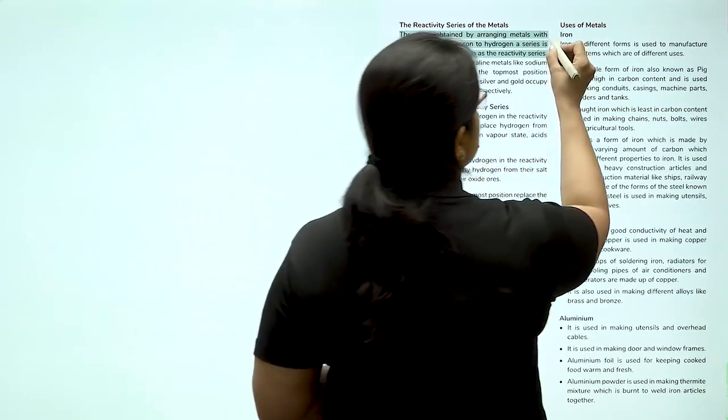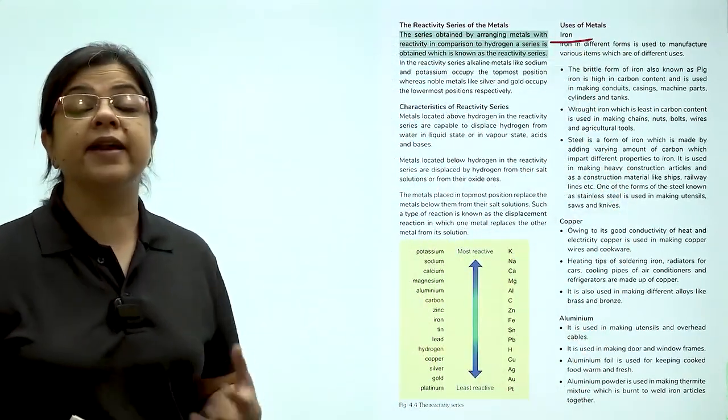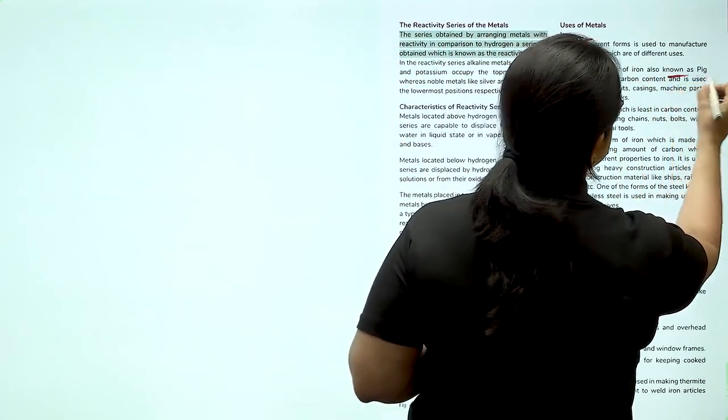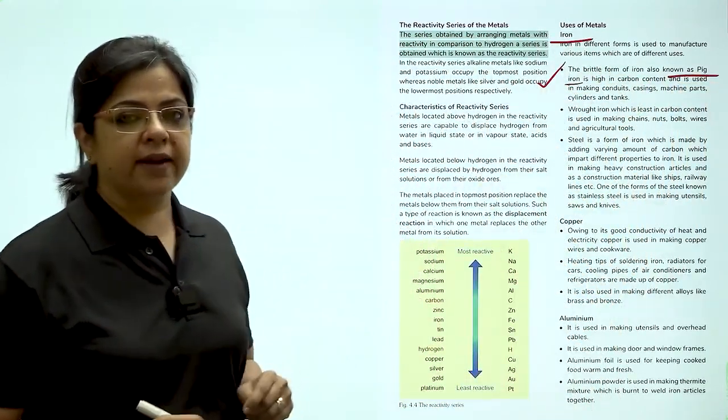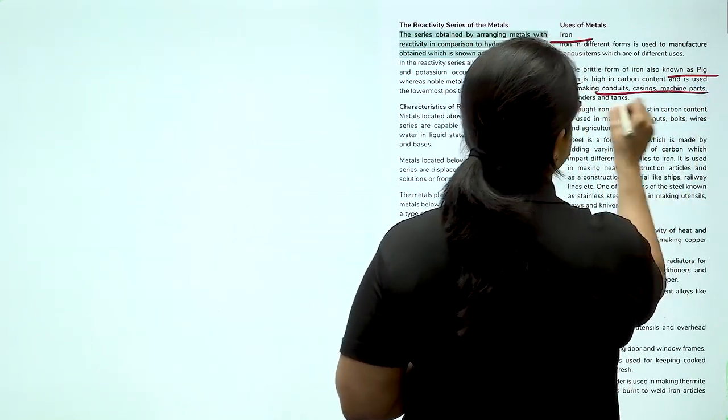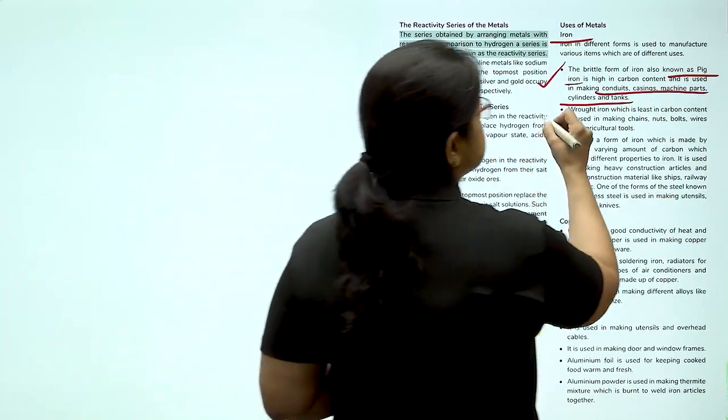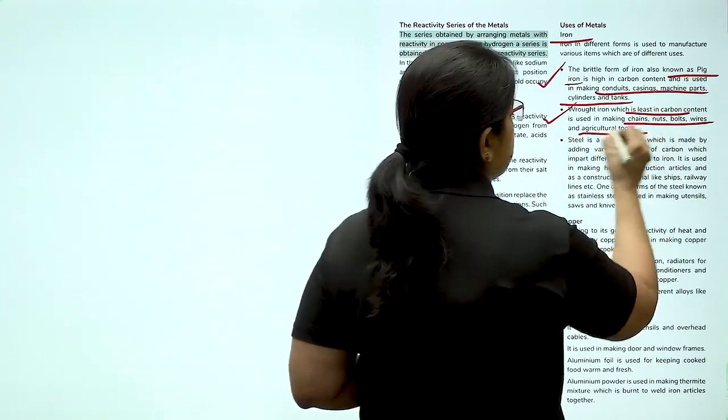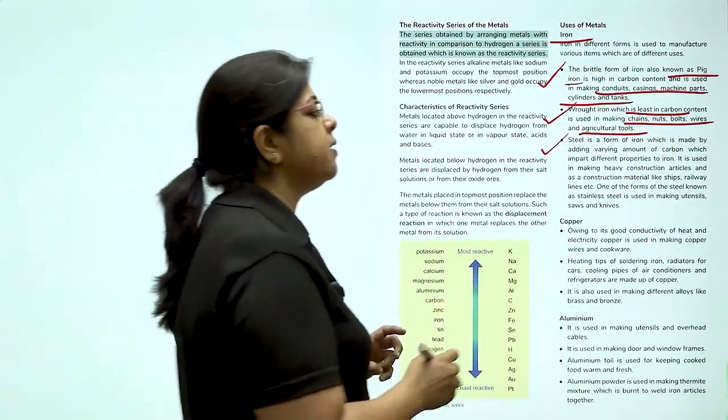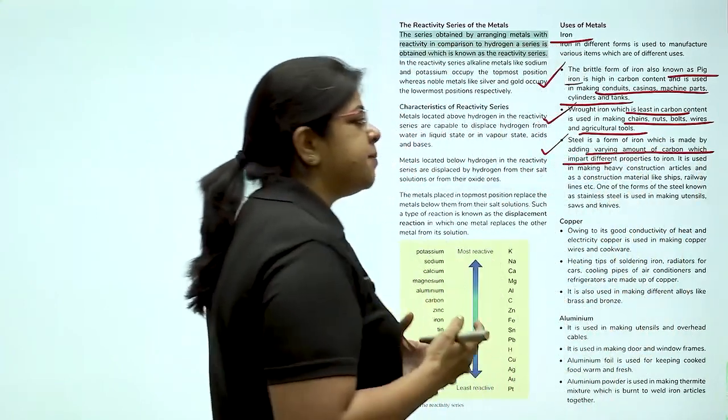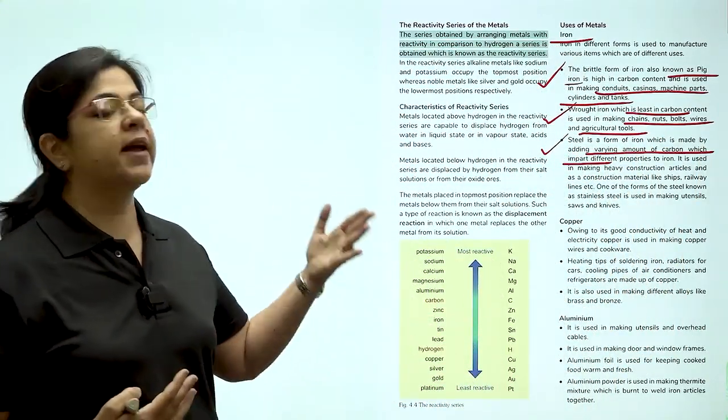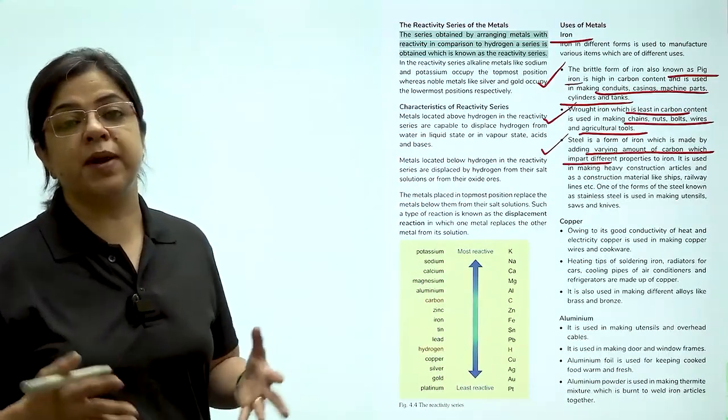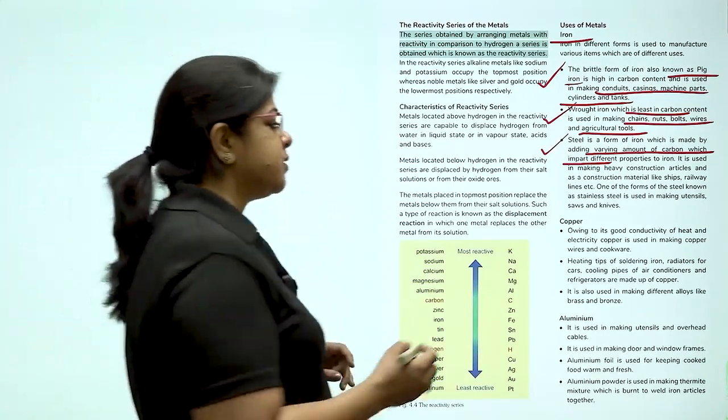Let us come to the uses of metals. Let us talk about iron first. We know that iron industry is a huge industry in our own country. The brittle form of iron is called pig iron. It is used in forming conduits, casings and machine parts, cylinders and tank. Wrought iron which is least in carbon is used in making chains, nuts, bolts, wires, agriculture tools and nowadays even furniture. Steel is a form of iron which is made by adding varying amount of carbon. It imparts different properties to iron like it makes it corrosion free, rust free and we all know that steel is used in all the utensils that we are practically using at home in the kitchen.